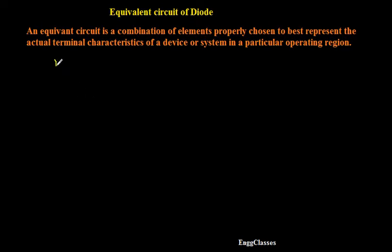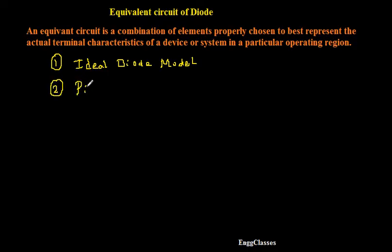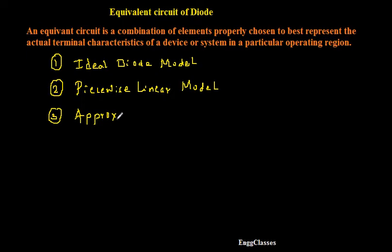The first type is the ideal diode model. The second type is the piecewise linear model. And there is a third type that we call the approximate model. We will consider each one by one.